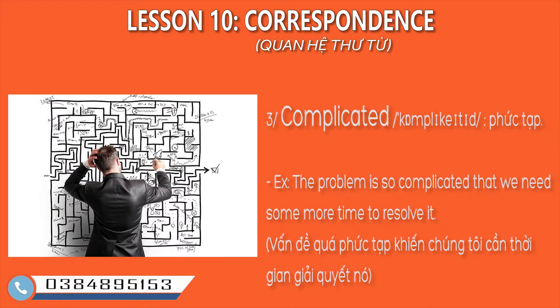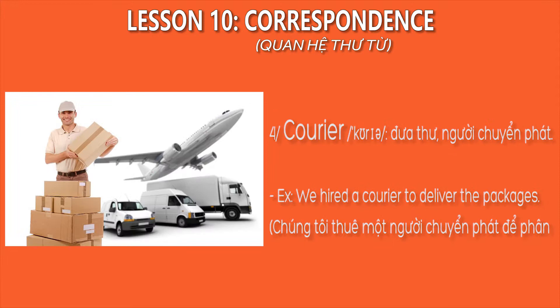Word 3: Complicated. Từ này có nghĩa là phức tạp. Example: The problem is so complicated that we need some more time to resolve it.